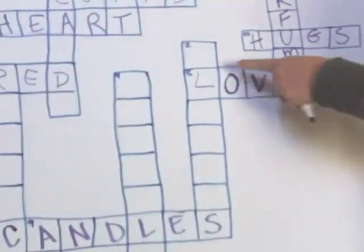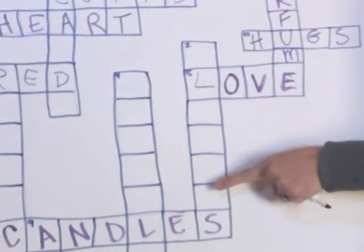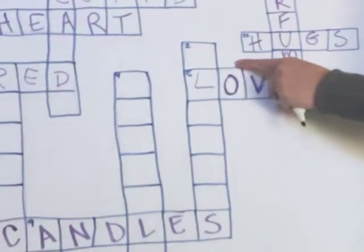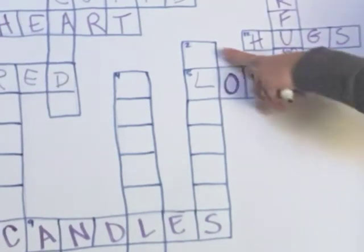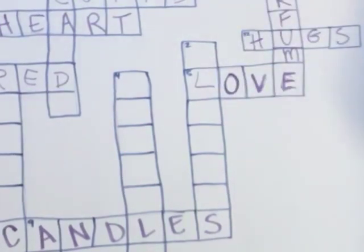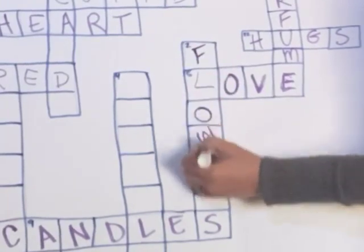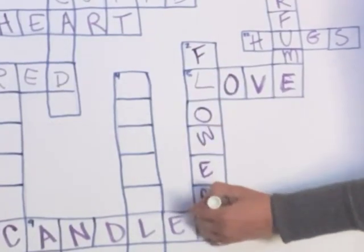Two down. It's one, two, three, four, five, six, seven letters. And the clue is roses and tulips. Two favorite and popular flowers given on Valentine's Day. But what are they? They're flowers. Yes.